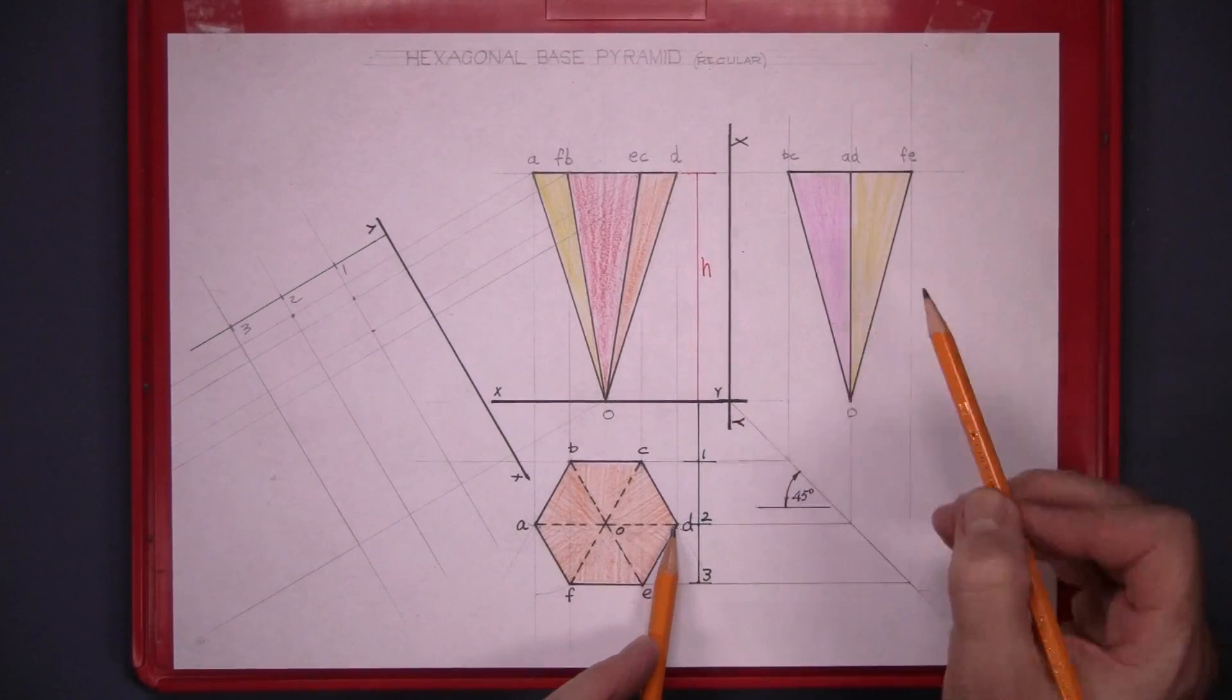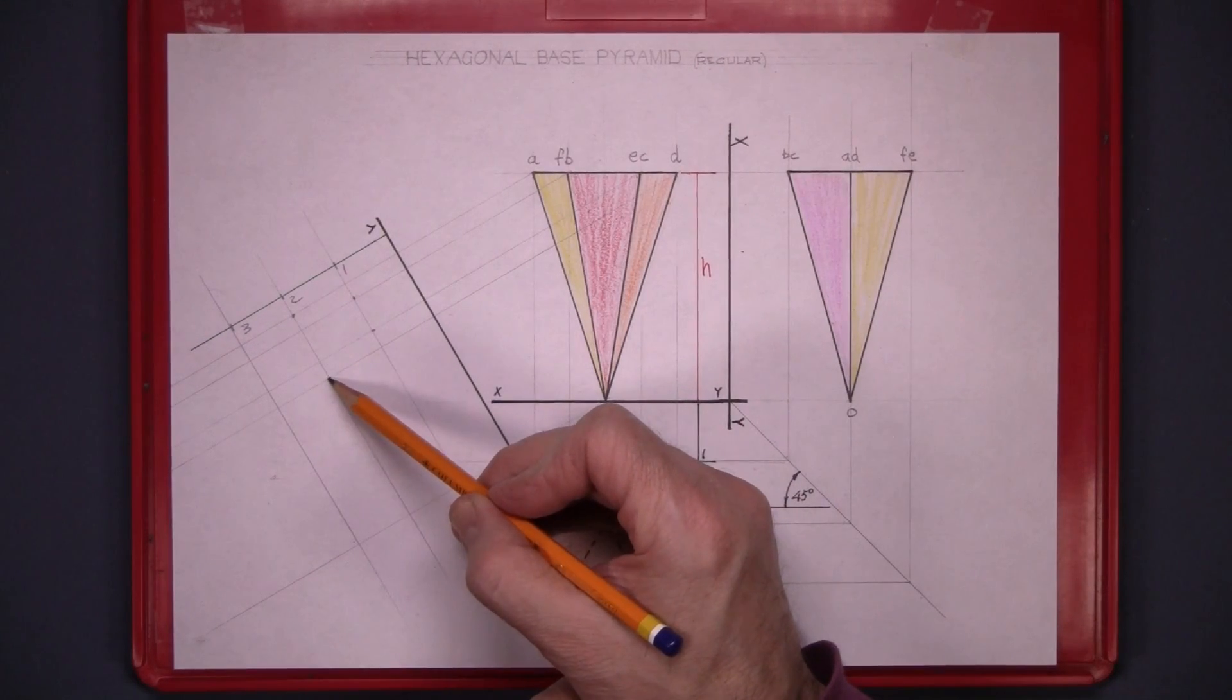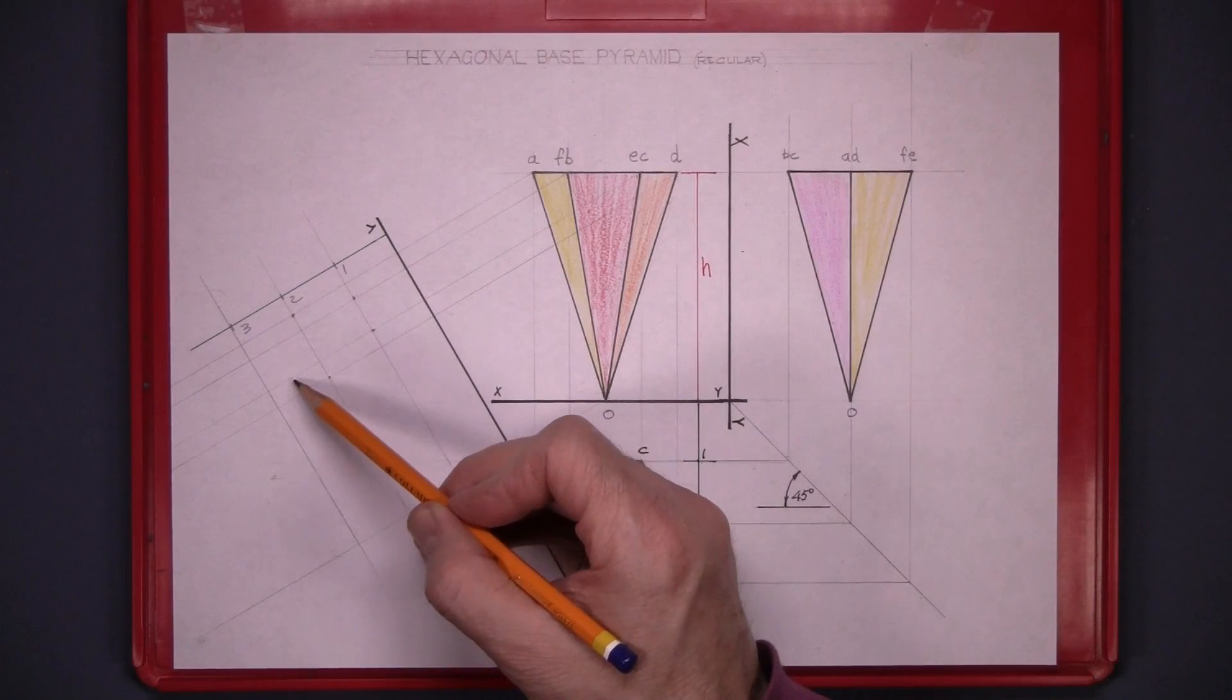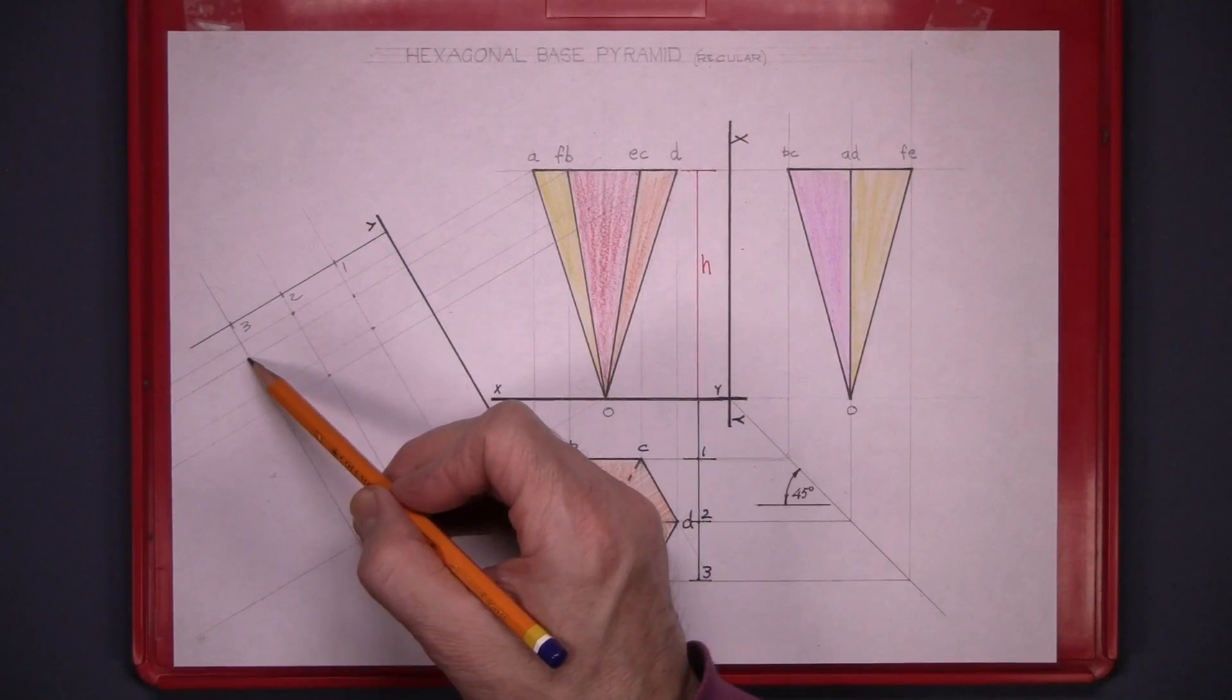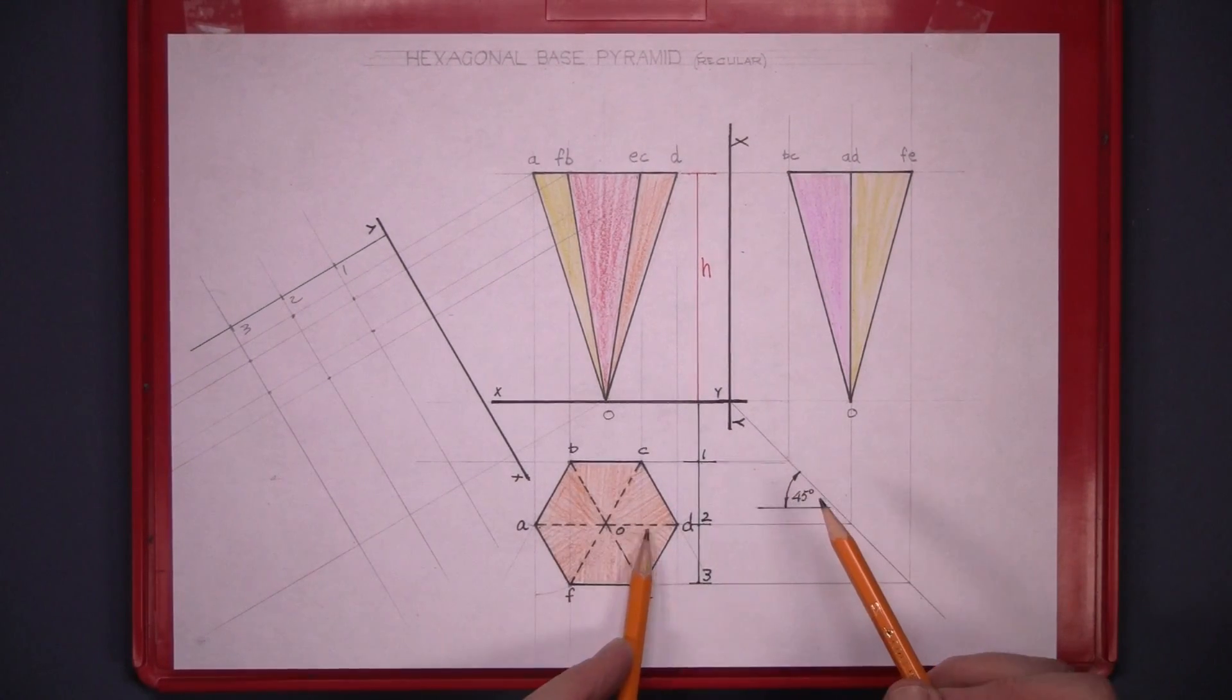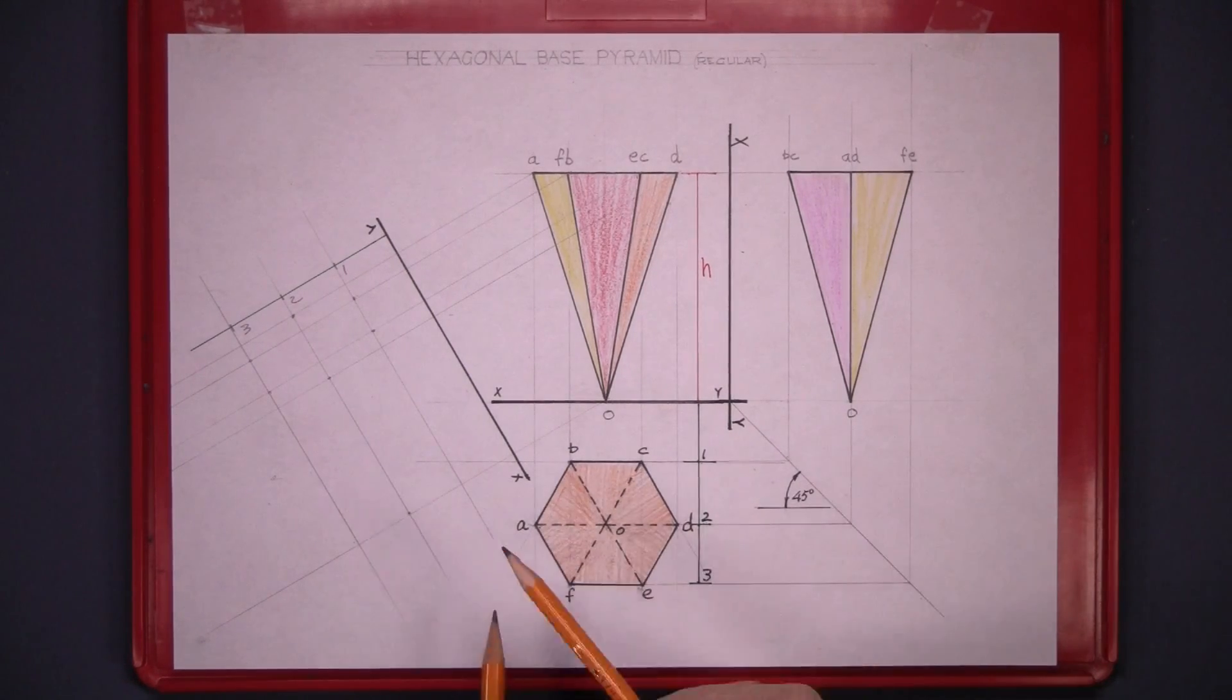And E is on line 3. So bring E out to line 3. And F is also on line 3. And there are the points. And the apex O is on line 2. So that gets you the point of the pyramid.